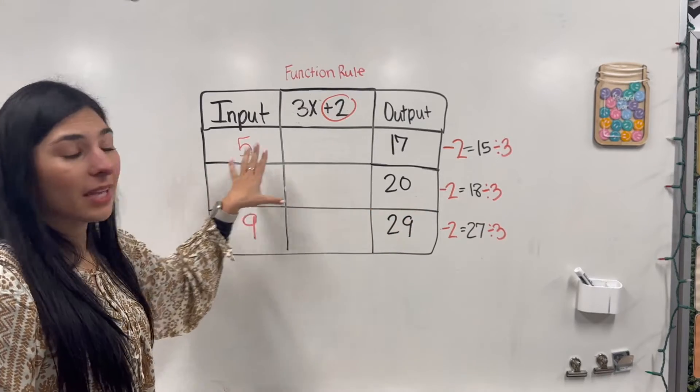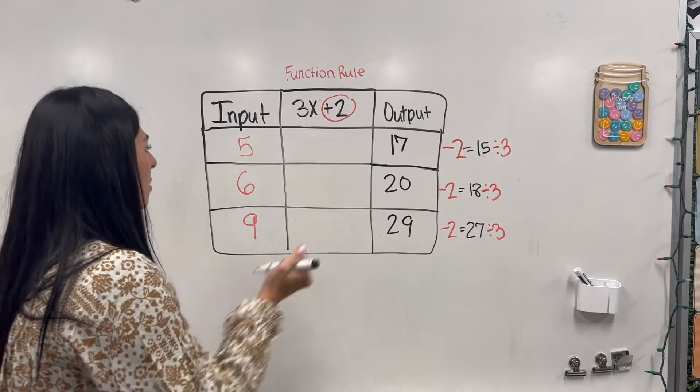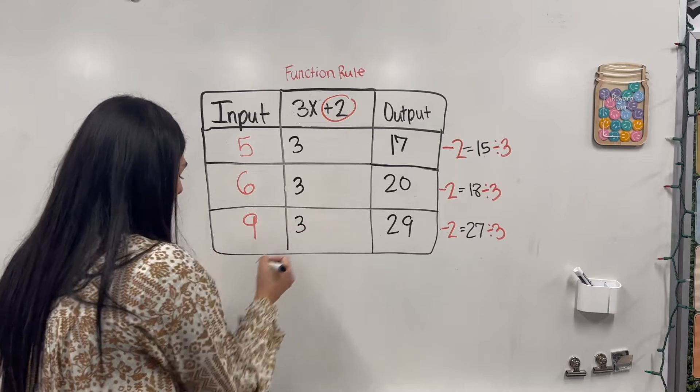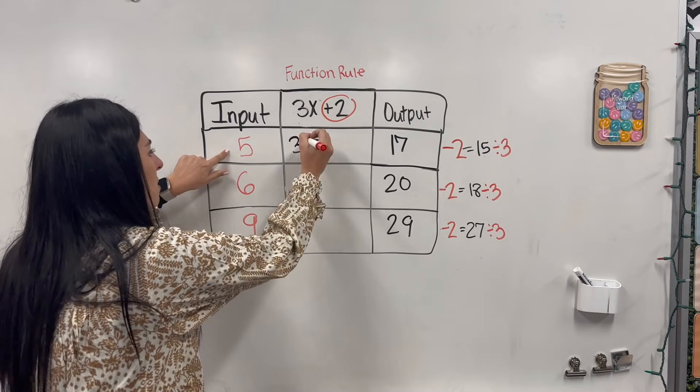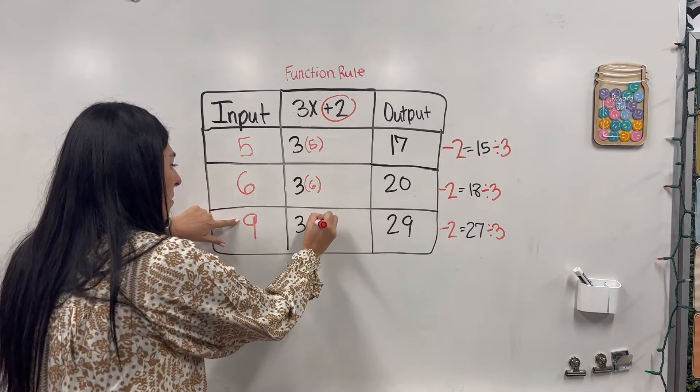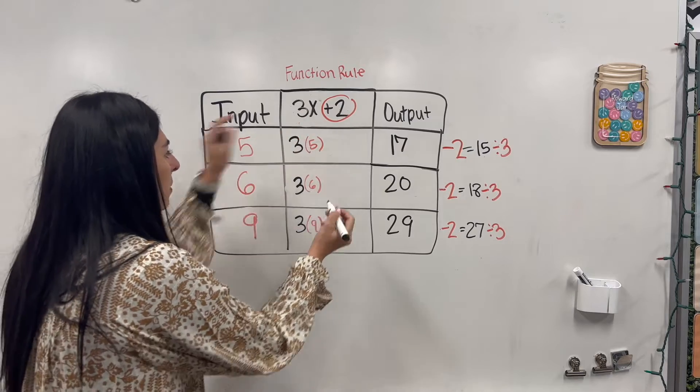From here, let's go ahead and plug in our function rule. We have our main thing though. So I'm going to stick with 3, 3, 3, our x, 5, 6, 9. Then I'm adding our original plus 2.